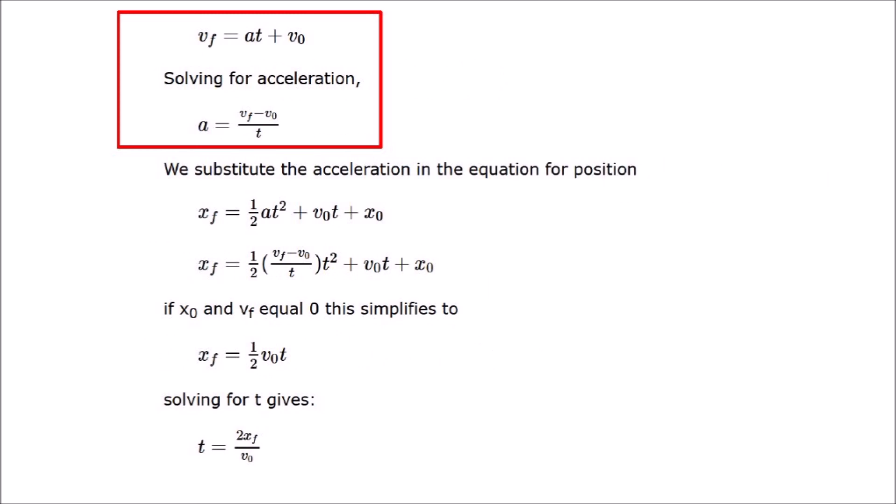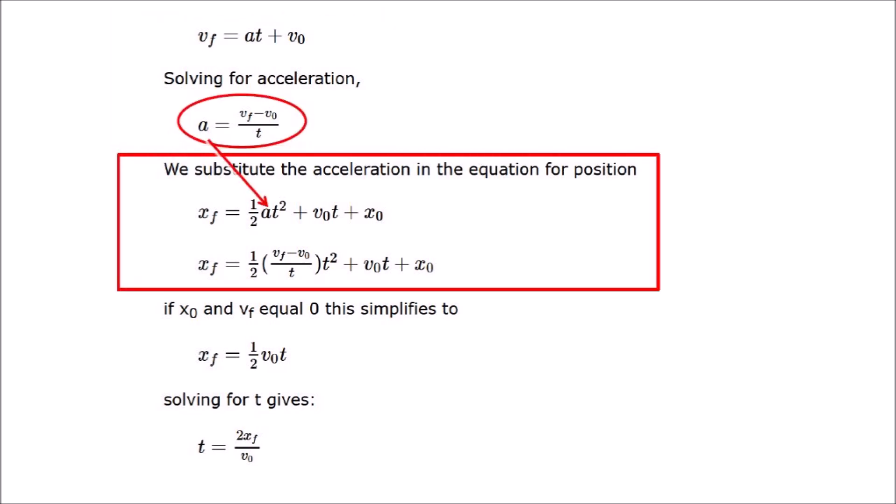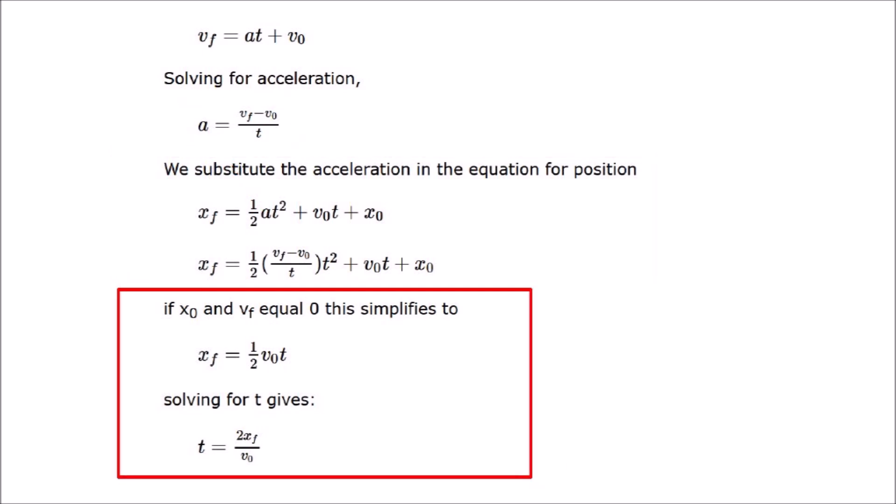First, we take the formula for velocity and solve for acceleration, which is equal to the final velocity minus the initial velocity divided by time. Remember this equation for acceleration. We will reference it later. Next, we substitute the acceleration in the equation for position. X zero is the initial position, which corresponds to the projectile as it contacts the target, and VF is the final velocity, which is zero when the projectile rests at the vertex of the cavity after traveling through the viscous medium.